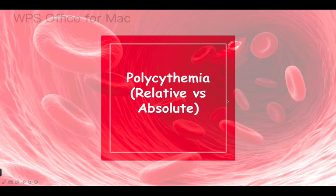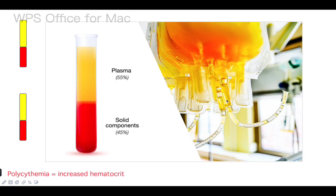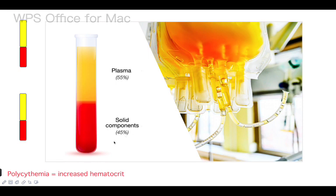Welcome back. This video was based on a specific request about the polycythemia table in First Aid. By the end of this video, everything should be simplified. Polycythemia is defined as increased hematocrit. We know that blood is plasma and red blood cell mass — roughly 55% plasma and 45% red blood cell mass — so if red blood cell mass goes above 45%, we call this polycythemia.